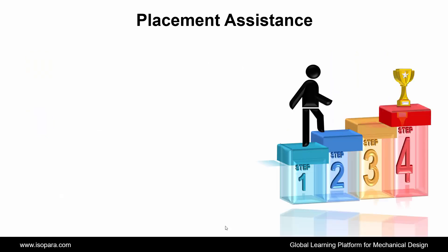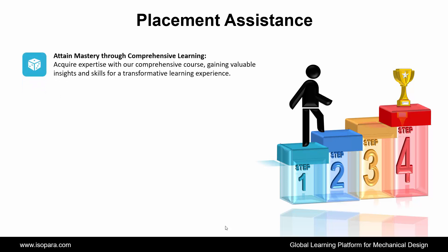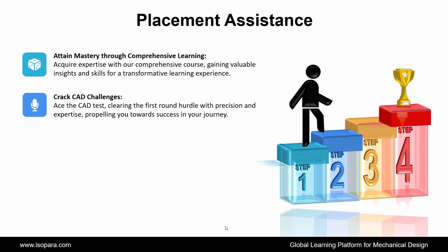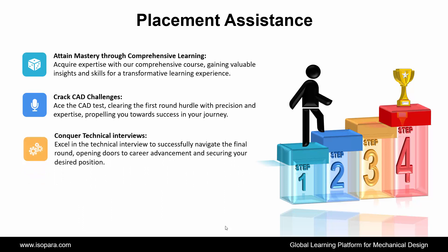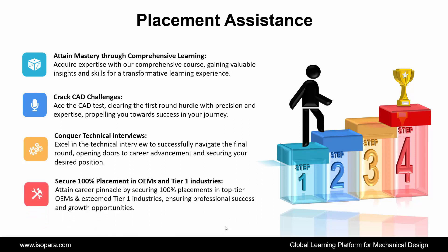Now we see placement assistance. ISOPARA's placement assistance works in 4 steps. First is Attain mastery through comprehensive learning — acquire expertise with our comprehensive course, gaining valuable insights and skills for a transformative learning experience. Second is Crack CAT challenges — ace the CAT test, clearing the first round hurdle with precision and expertise, propelling you towards success in your journey. Third is Conquer technical interviews — excel in the technical interview to successfully navigate the final round, opening doors to career advancement and securing your desired position. Fourth is Secure 100% placement in OEM and Tier 1 industries — attain career pinnacle by securing 100% placements in top-tier OEM and esteemed Tier 1 industries, ensuring professional success and growth opportunities.